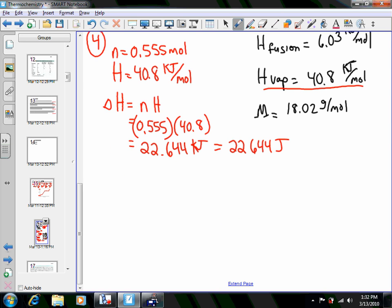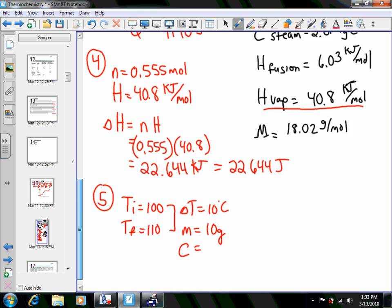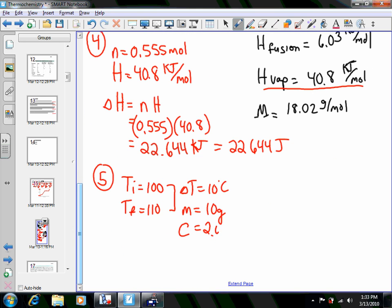Our last step is to heat up. So we're back to Q equals MC delta T. Starting at a temperature of 100, finishing at a temperature of 110. So that's a delta T of 10 degrees. We now have a mass of 10 grams. And our heat capacity for steam is the same as it was for ice, it's 2.01 joules per gram degree Celsius.